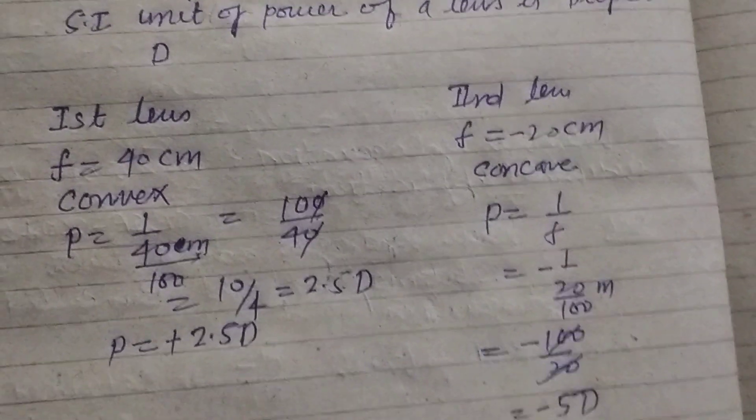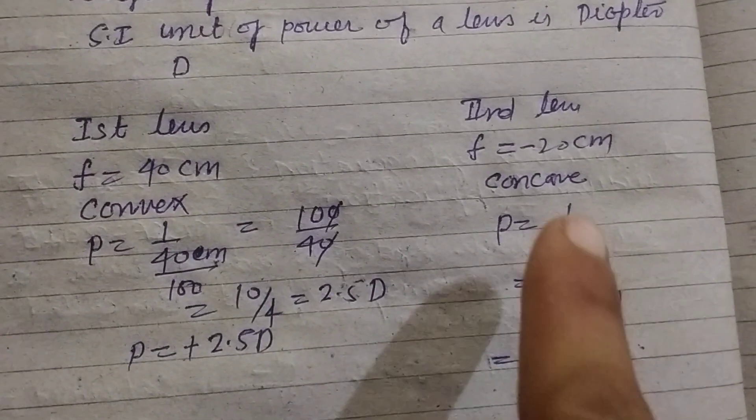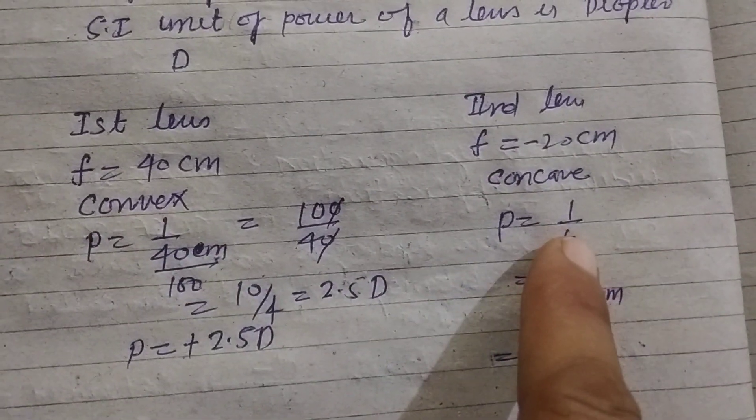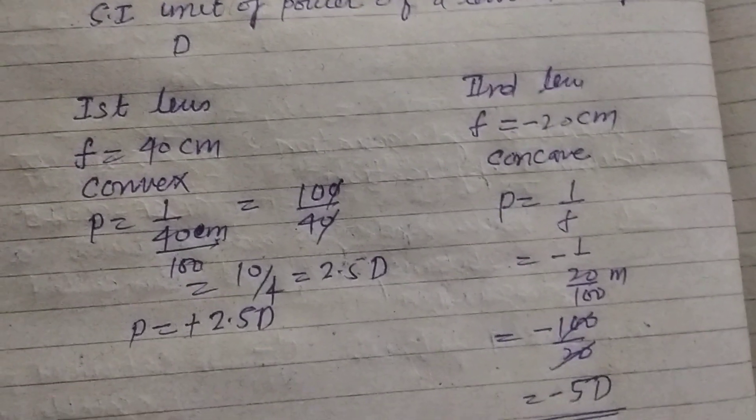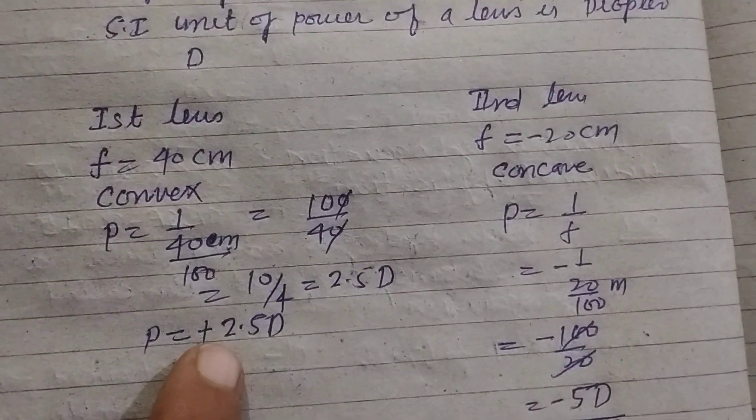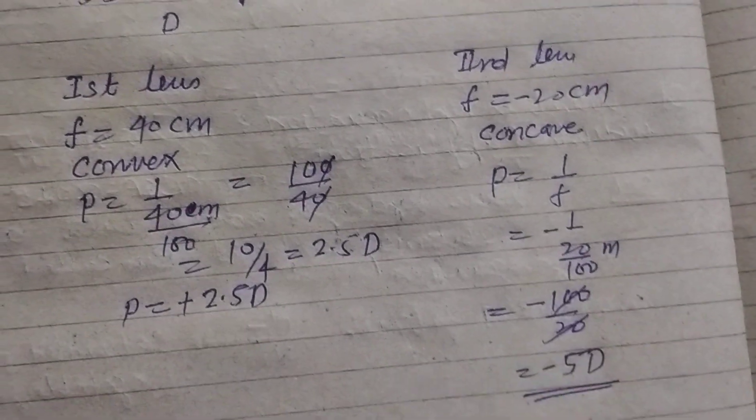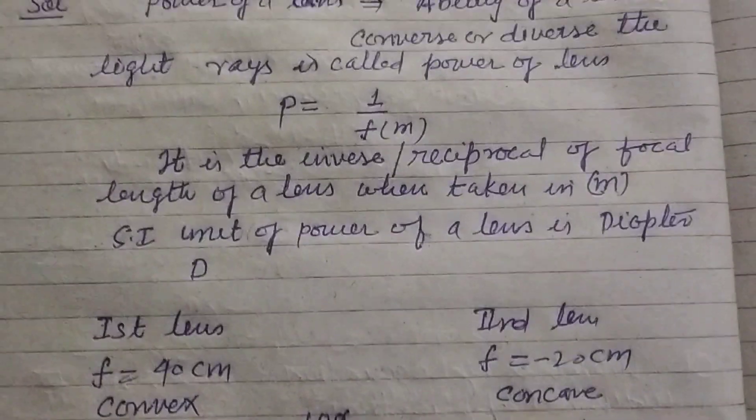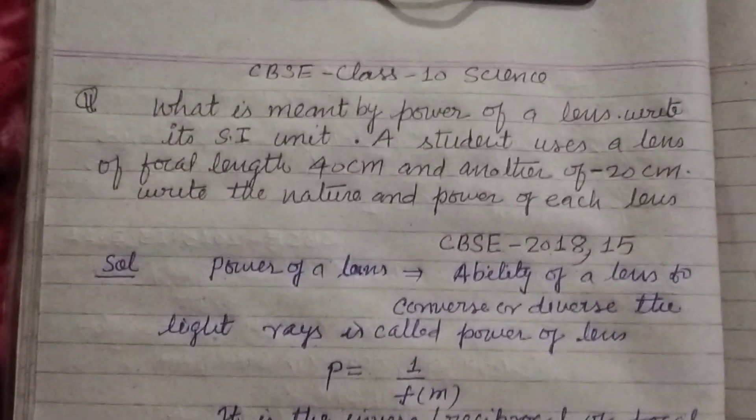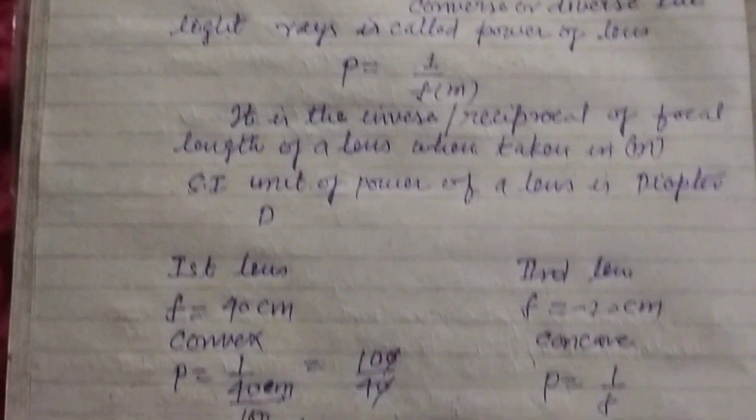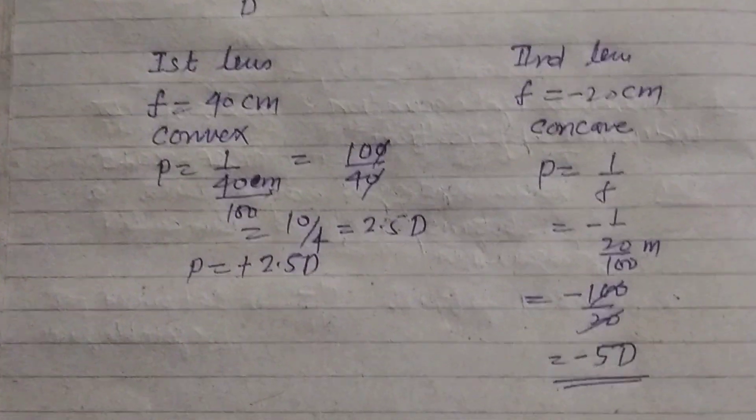So the nature of the lenses is: first is convex and another is concave and their power is plus 2.5 diopter and minus 5 diopter. So students, in this way we solve this problem. I hope you got it. Please like the video, subscribe the channel. Thanks for watching, subscribe to the channel.